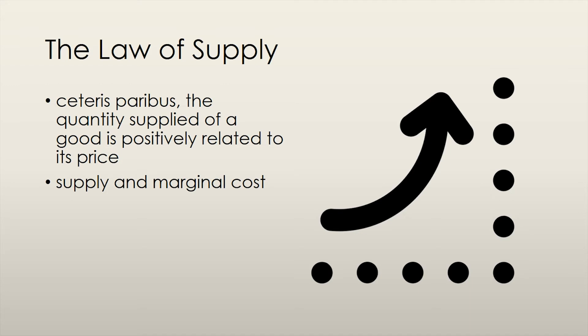The Law of Supply describes the positive relationship between the price and the quantity supplied of a good or service. Essentially, this means that as price increases, the quantity supplied of a good increases, and as price decreases, the quantity supplied of a good decreases. Both price and quantity supplied move in the same direction.